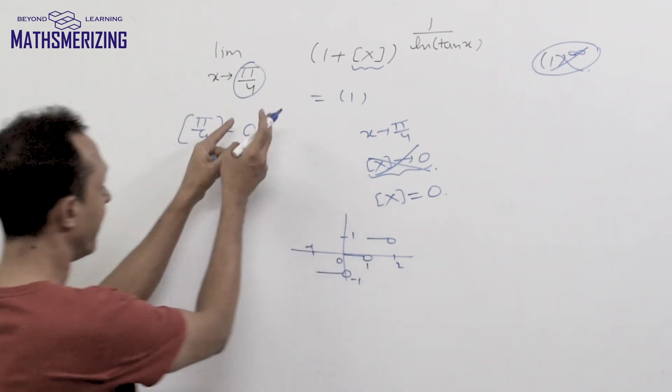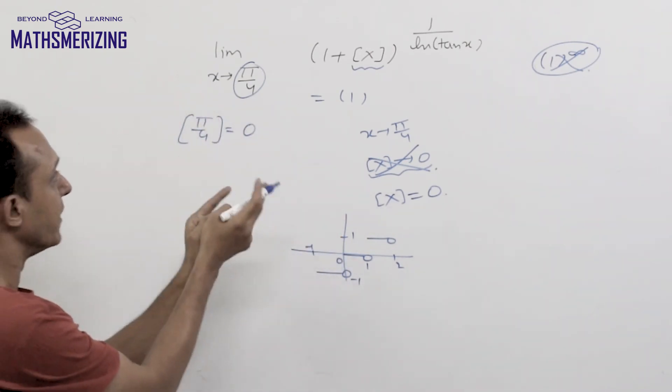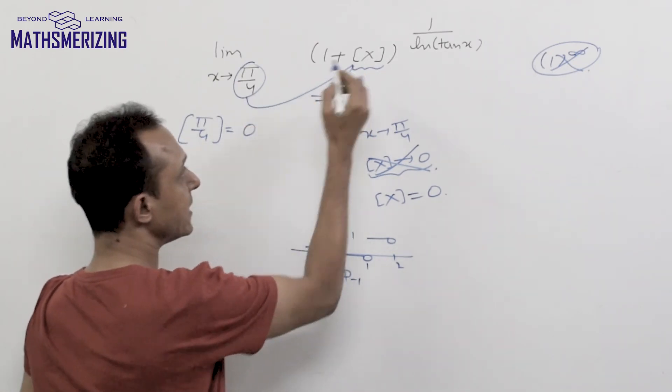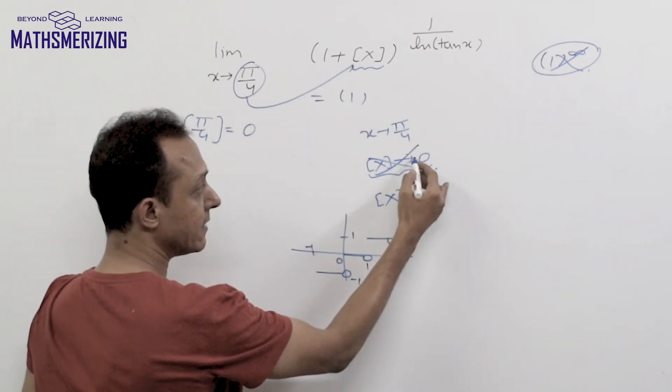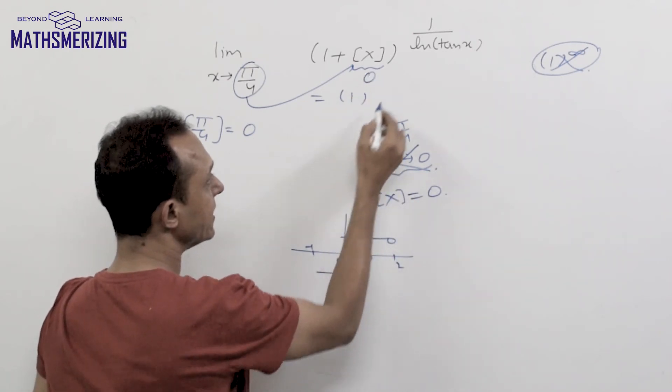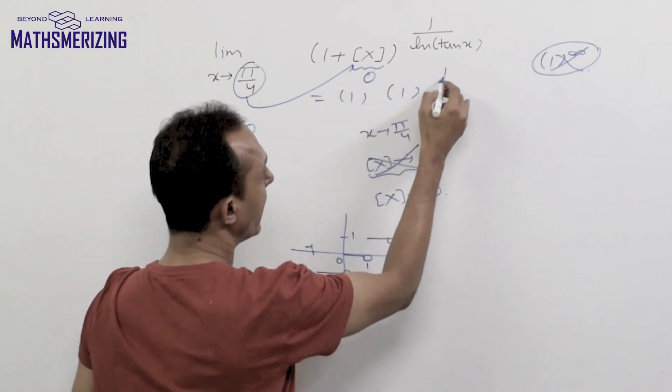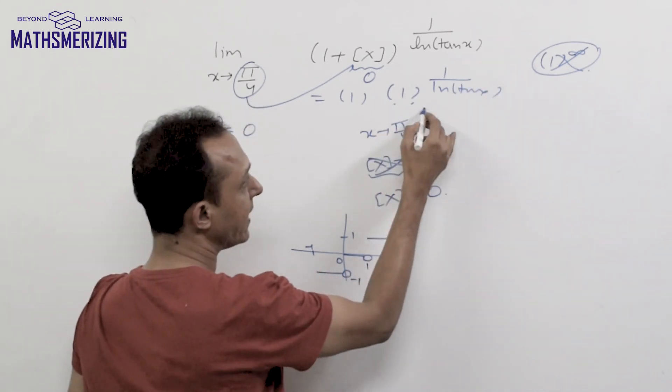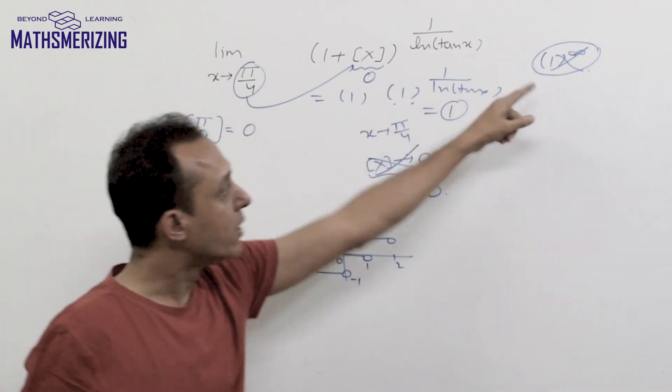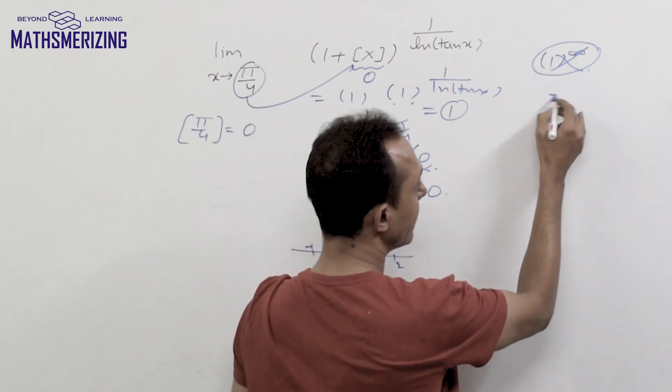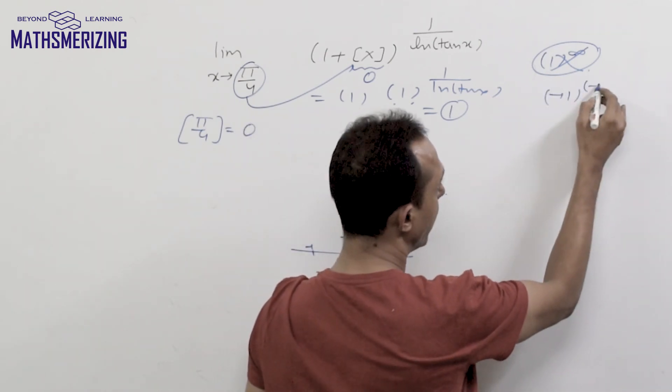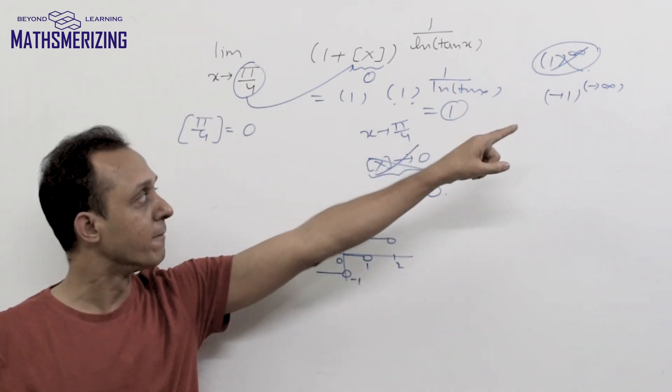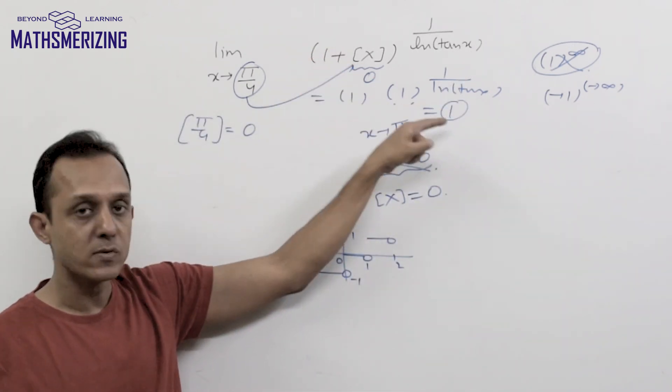So if I am solving any limit having greatest integer function, now in this case when x tends to pi by 4, this greatest integer function of x isn't tends to 0, it is exactly 0. Then I am left with 1 to the power 1 upon log 10x, and 1 to the power anything is 1. It is 1 to the power infinite form when it tends to 1, 1 to the power tends to infinite. So this limit is not 1 to the power infinite limit form, the answer to this limit simply is 1.